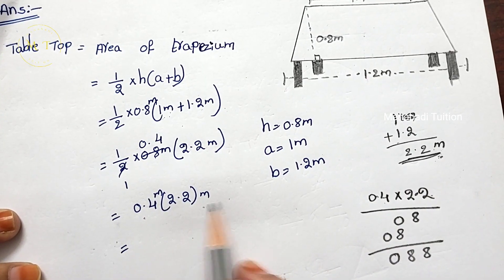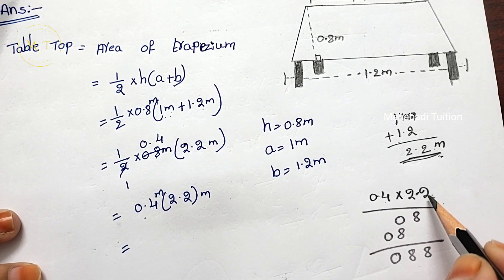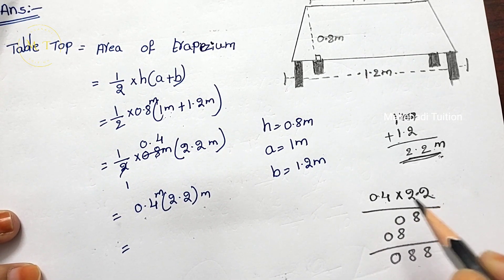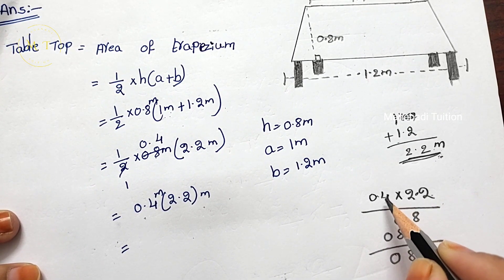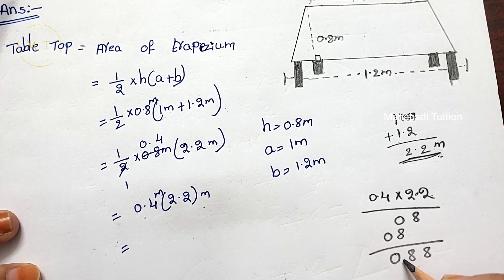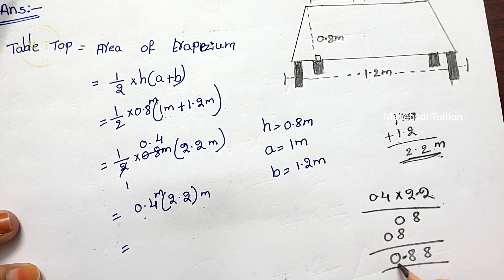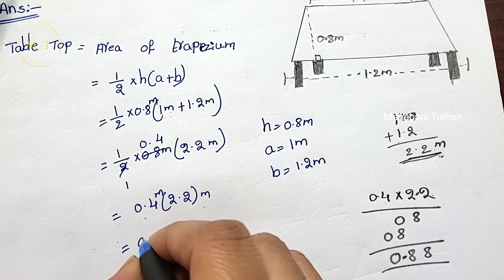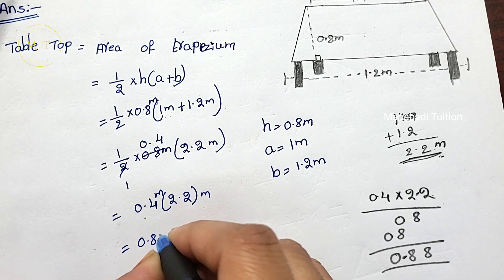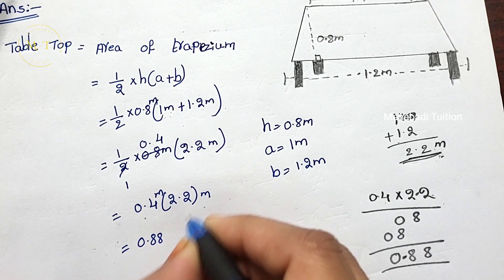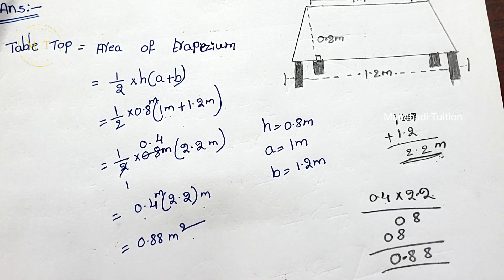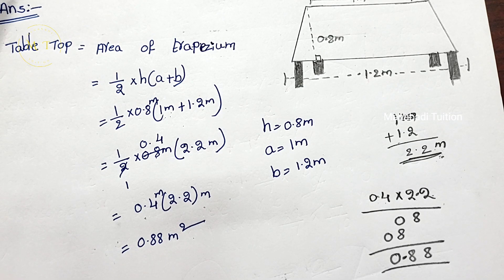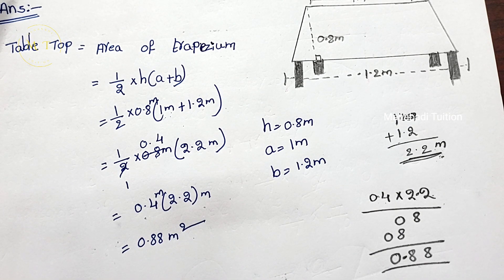If you multiply these two numbers — here there is one digit before the point, and here there is one digit before the point — so in the total answer there are two digits before the point. So it is 0.88 — meter into meter — square meters. 0.88 square meters.